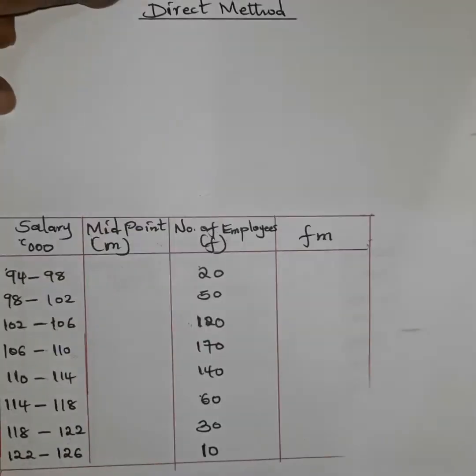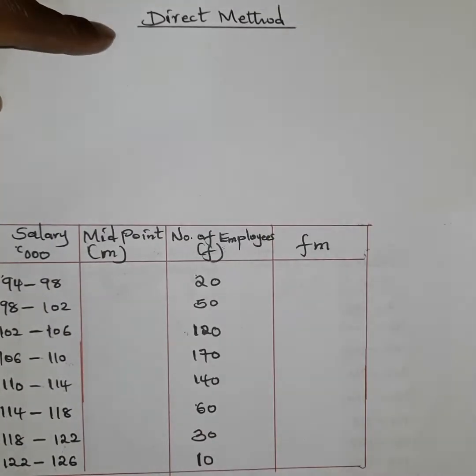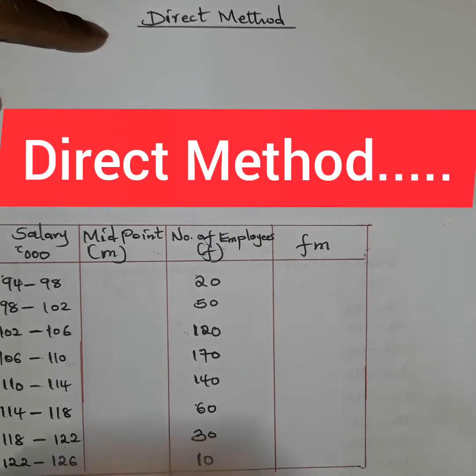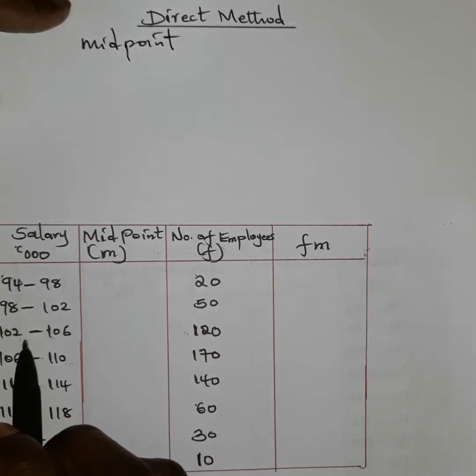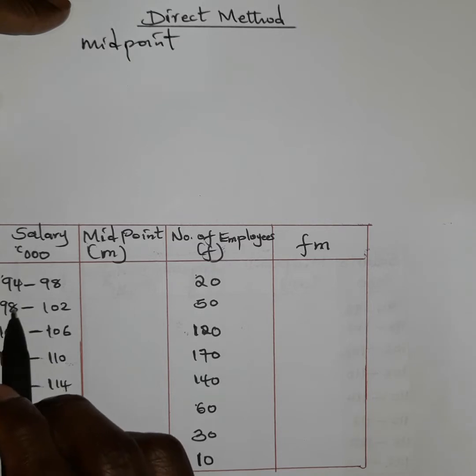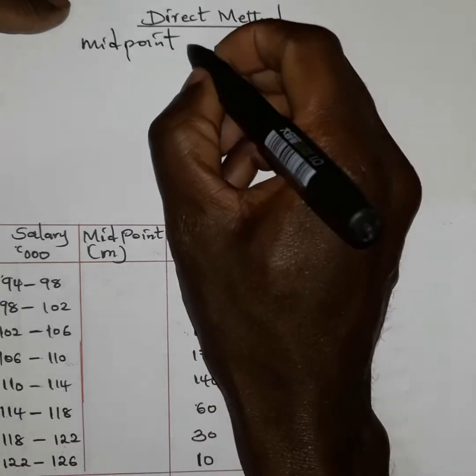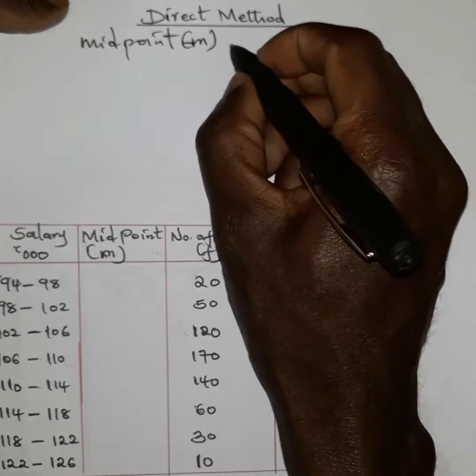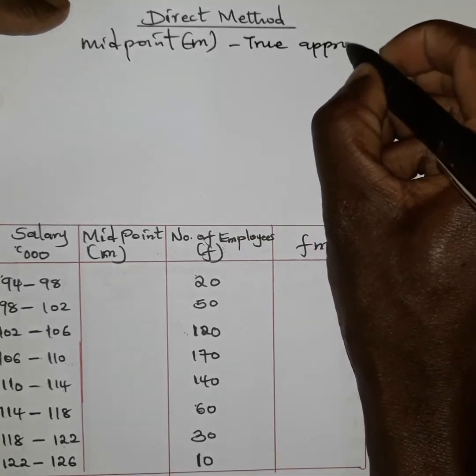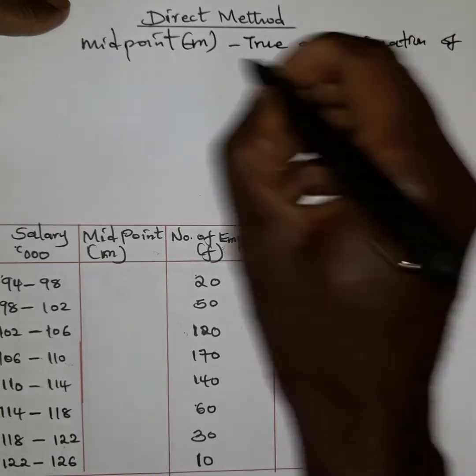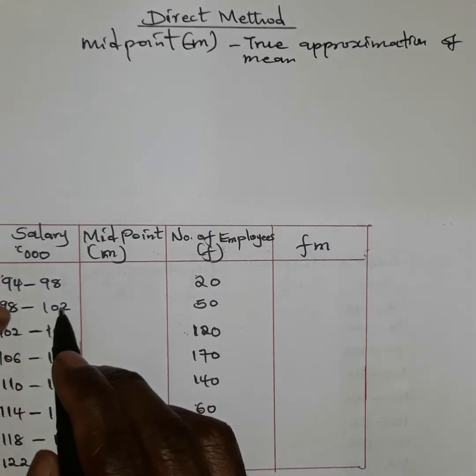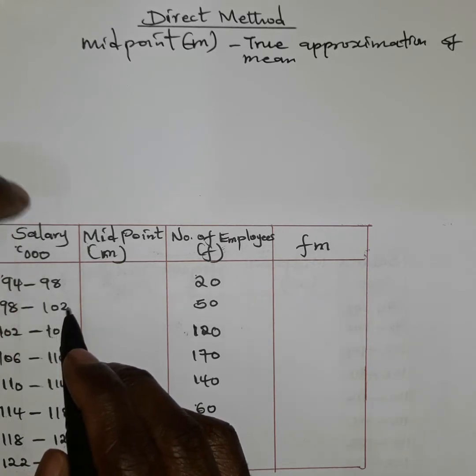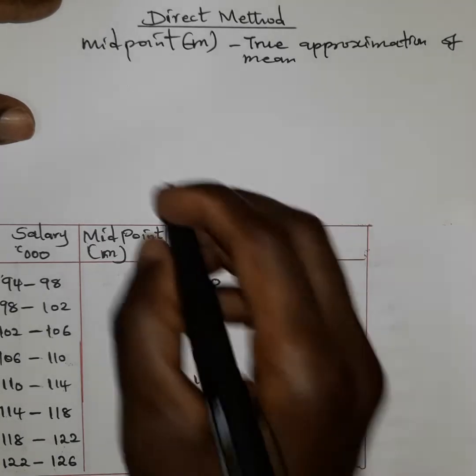For the case of grouped data, I want us to use what is known as the direct method. Under this particular direct method, we are going to incorporate what is known as the midpoint. The midpoint here refers to the middle figures or the middle numbers at the center of each class or each group. We are using the midpoint because midpoint is actually a true approximation of mean, because we assume that the mean, which is the value that appears at the middle of particular data, will be found at the center.